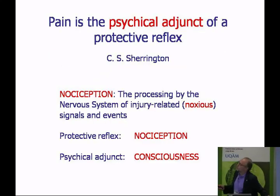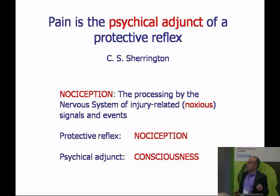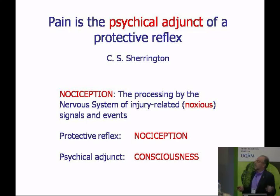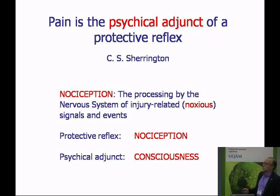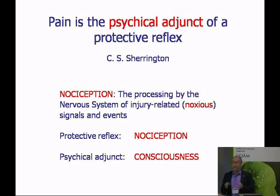Sherrington's definition generates a second concept he himself described: nociception. Nociception is the processing by the nervous system — by the brain — of injury-related, noxious signals and events. We can find this processing in any animal, in humans, even in invertebrates, even in bacteria and single cells. Every living creature has a system to process injury-related or noxious signals and events. And if we take that away from the consciousness side — from the psychical adjunct — then we have a completely different process called nociception, which is directly amenable to the scientific method.